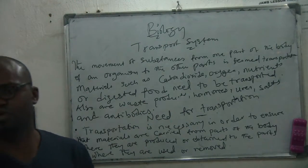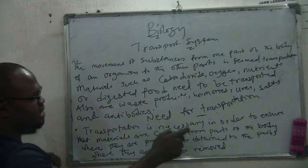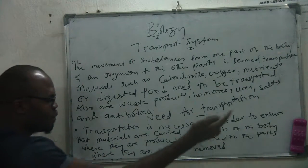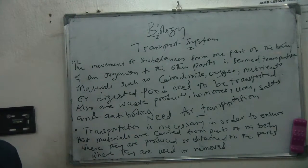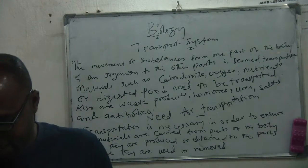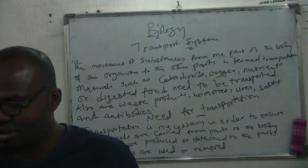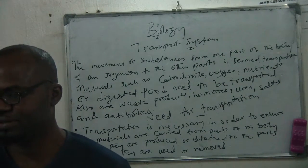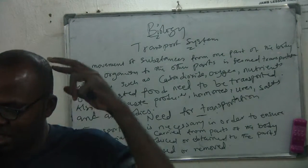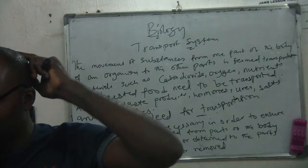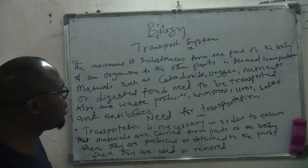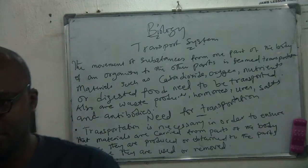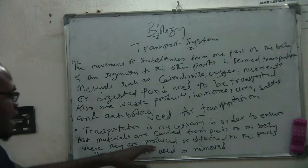An exam may ask you the needs for transportation - why would you want to transport? Number one: transportation is necessary to ensure that materials are carried from one part of the body where they are produced or obtained to the part where they are used or removed. For example, urea needs to get to the bladder so it can go out. Oxygen needs to be transported to the brain - if your brain doesn't get enough oxygen you might faint and collapse.